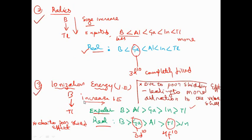The second property is atomic radius. On going down from top to bottom, the size of the atom is expected to increase from boron to thallium. The expected order is boron < aluminum < gallium < indium < thallium. But in actual sense, gallium is smaller than aluminum because gallium has a completely filled 3d10 configuration, so the actual order is boron < gallium < aluminum < indium < thallium.